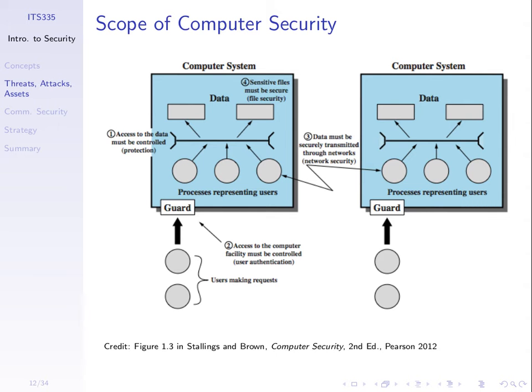An important part of securing our computer systems is dealing with the users. When a user tries to access a computer, we need to make sure they are a user that is allowed to access it. So user authentication is our next topic — it's about the humans that use the computer and how we know they are the person allowed to access it. Many other security features depend upon that.